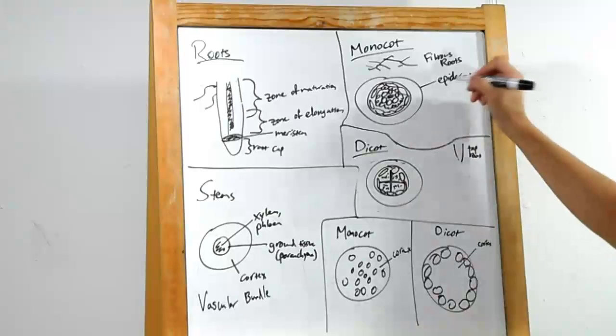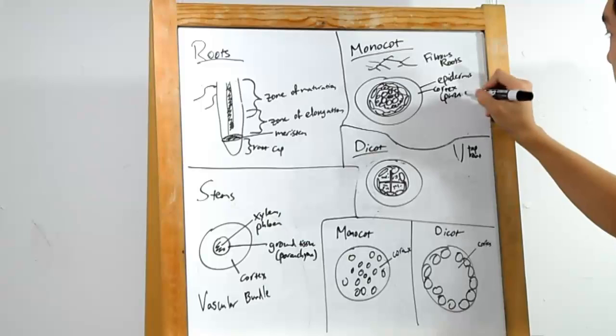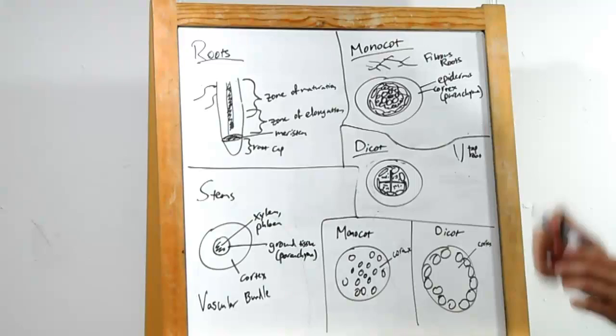Immediately inside the epidermis, you have the cortex. This is made up of parenchyma cells. This is used for storage. Other than that, not too much.